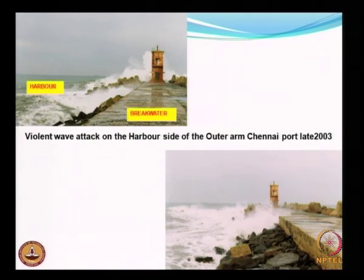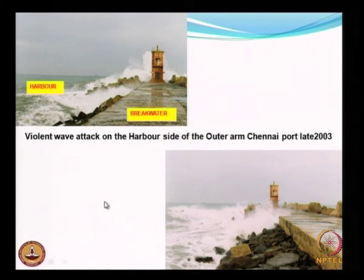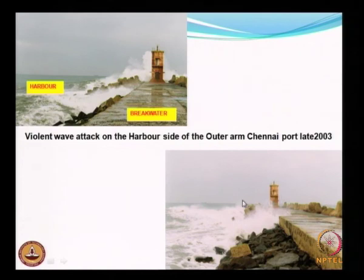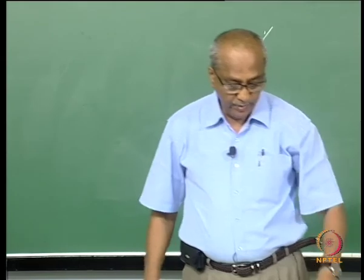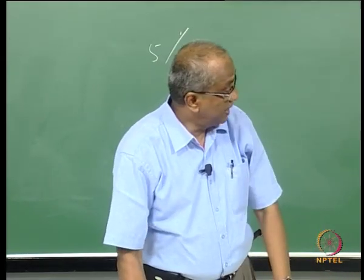This picture shows Chennai Harbour outer arm during a cyclone in late 2003, showing the kind of overtopping that can occur. Usually there is not much overtopping, but during a cyclone you can see what happens — the wave reportedly reached the top of the lighthouse tower, but the structure remained intact. With that, I complete the breakwater design studies.